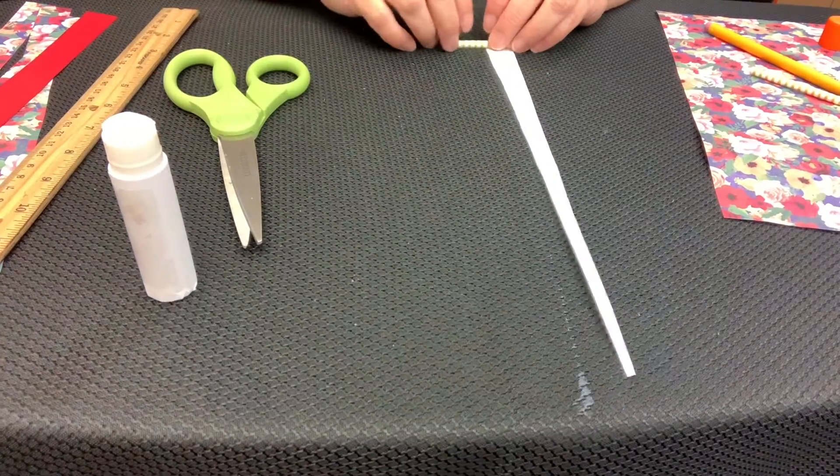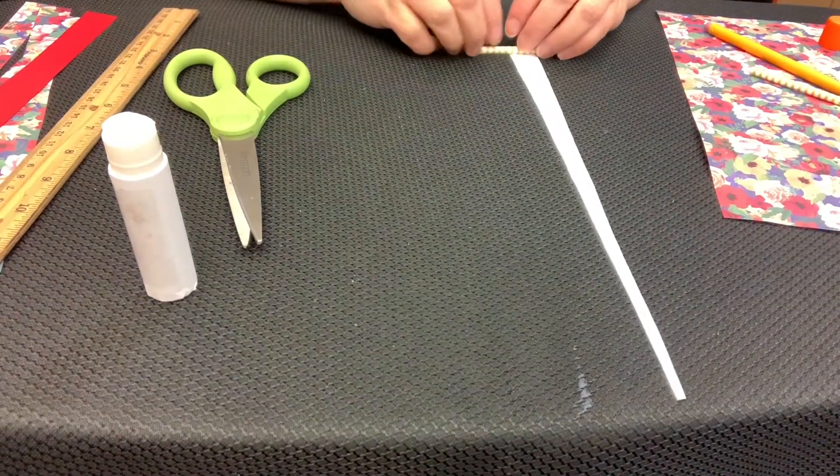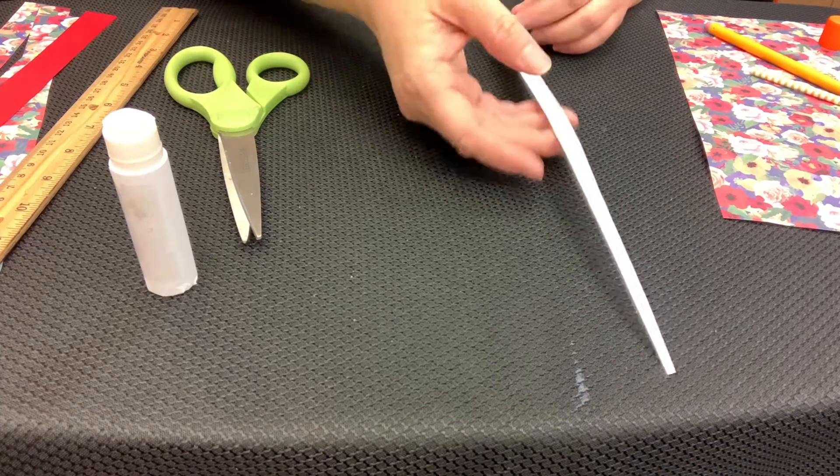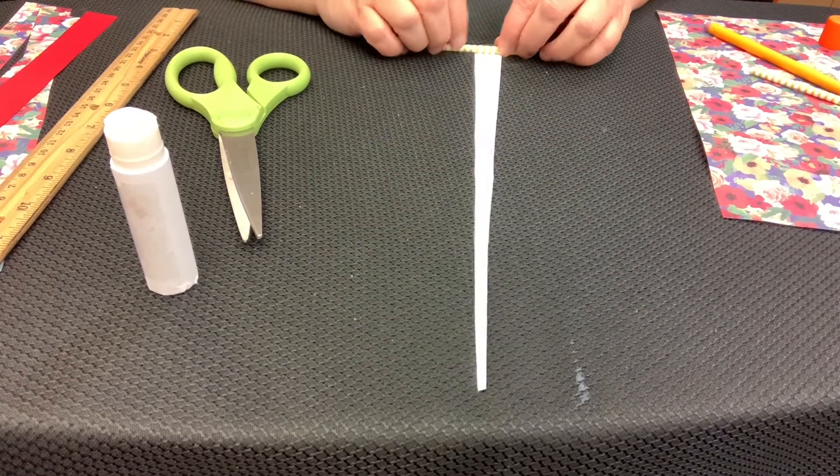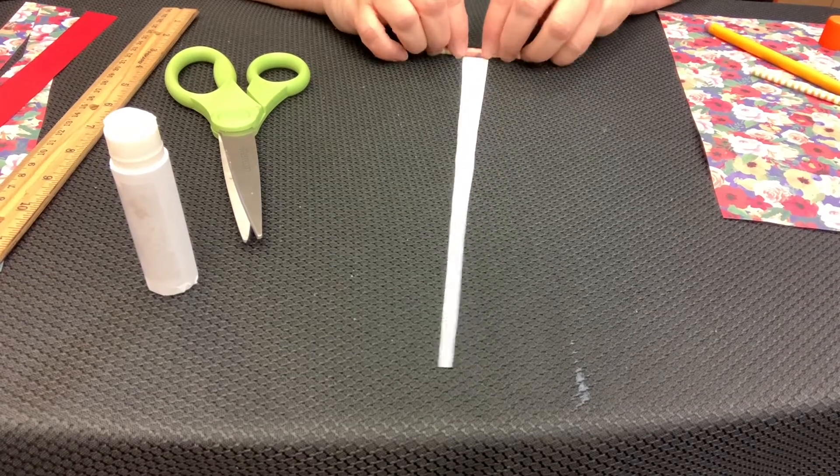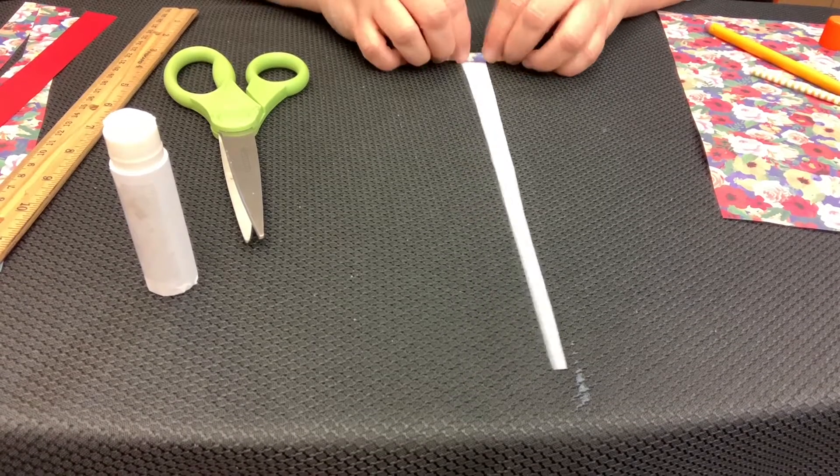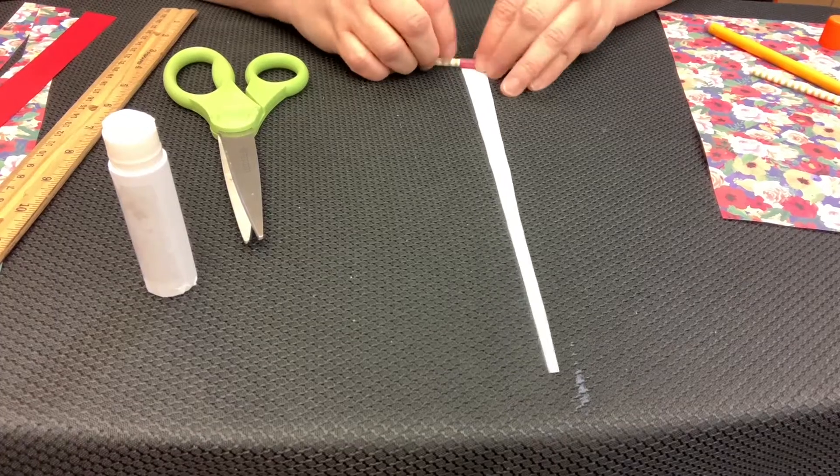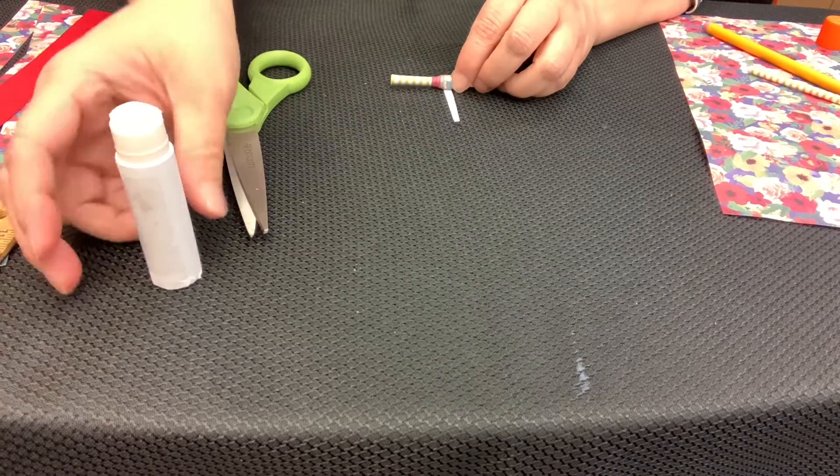You may need to put more glue toward the end of the strip whenever you roll. So now you take your cocktail straw and you roll your strip of paper.